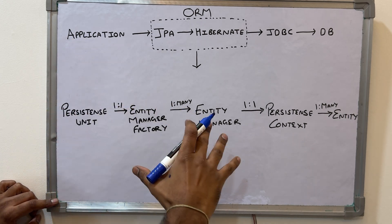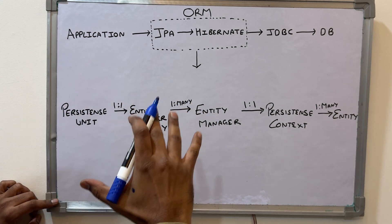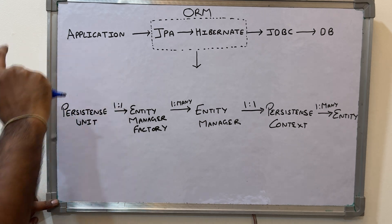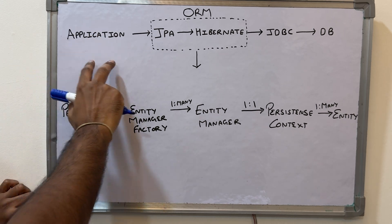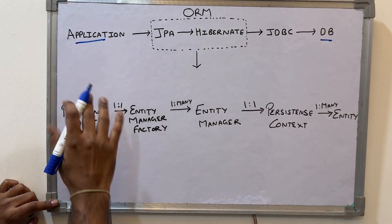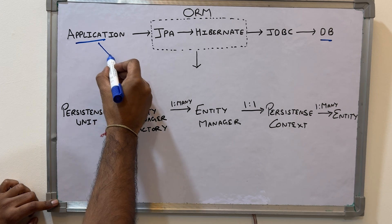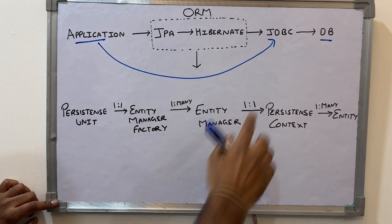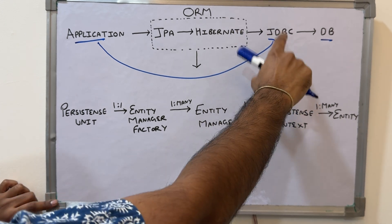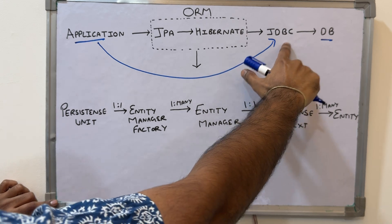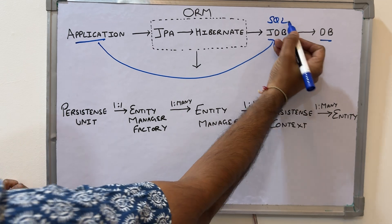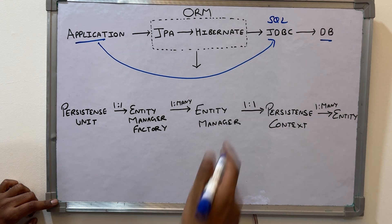So if you see these two diagrams, we will understand the basic architecture of JPA. Consider this your application where your business logic resides. From this, you have to connect to your DB, and there are two ways — either your application directly talks to JDBC APIs.